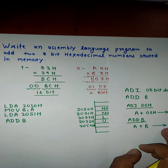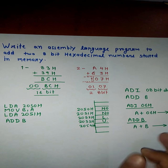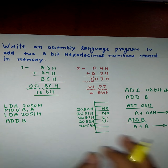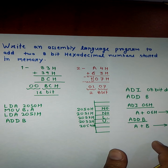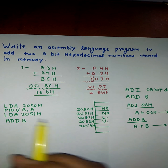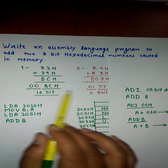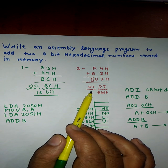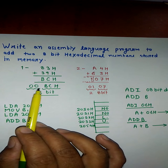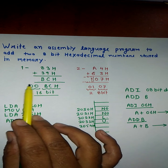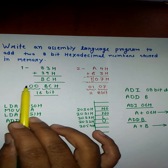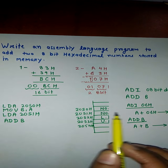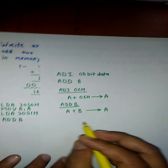After ADD B, the result is in the accumulator. However, there may be two cases: carry arises, or carry does not arise. In order to check that, we will use a conditional jump instruction.